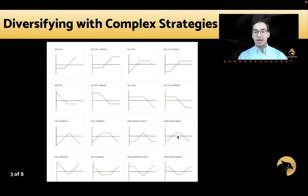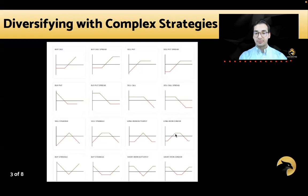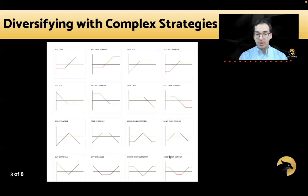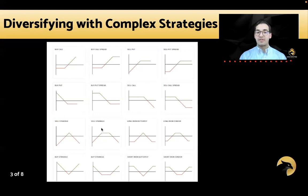Long iron butterfly and long iron condor are similar positions depending on strike prices — essentially two separate spreads, a call spread and a put spread put together. You capitalize when the underlying stays in between the strike prices. Buying the straddle and strangle is the opposite — you're long volatility, wanting the underlying to move big in either direction. Short iron condors define the risk on selling a strangle and you capitalize when the underlying stays in the middle.